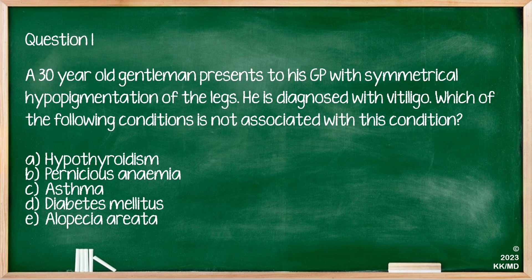Let's do some questions. Question one: a 30-year-old gentleman presents to his GP with symmetrical hypopigmentation of the legs. He's diagnosed with vitiligo. Which of the following conditions is not associated with this condition? A. Hypothyroidism. B. Pernicious anaemia. C. Asthma. D. Diabetes mellitus. E. Alopecia areata.